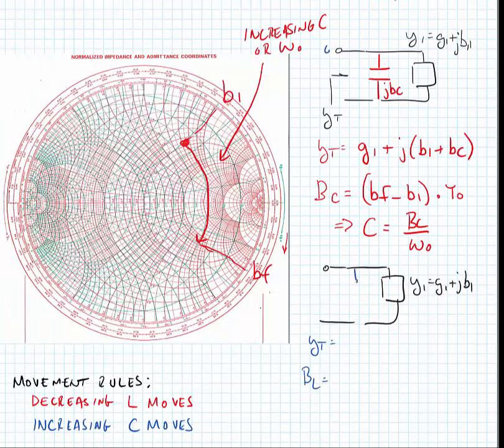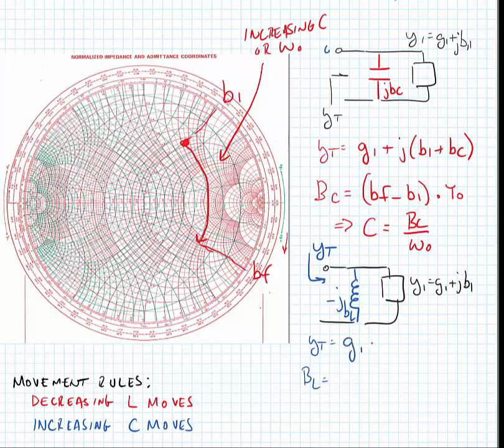Next we're going to add a shunt inductor. The shunt inductor has a value of minus jbl. If we look into the network past the inductance that we've just added, we can find the total admittance, y sub t is equal to g1 plus j times b1 minus bl.